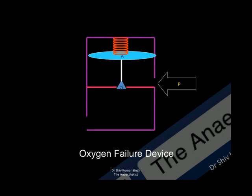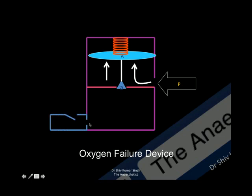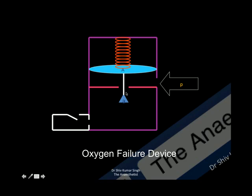Another application of this principle is in oxygen failure devices, which work in exactly the opposite way to an oxygen pressure regulator. Here, high pressure is applied on the disk so it lifts up and closes the outlet. The outlet from what was the high pressure chamber — now a low pressure chamber — is connected to a whistle called Ritchie's whistle. When the pressure drops, the disk moves down, gases flow, and you hear the whistle.